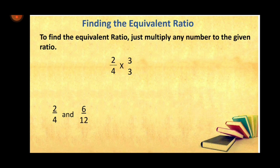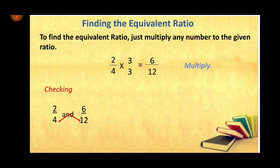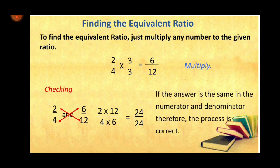Example: take 2 over 4 and multiply by 3. So 2 times 3 is 6 and 4 times 3 is 12, giving 6 over 12. For checking, cross multiply 2 over 4 and 6 over 12: 2 times 12 and 4 times 6 both equal 24. If the answer is the same in the numerator and the denominator, the process is correct and the answer is also correct.